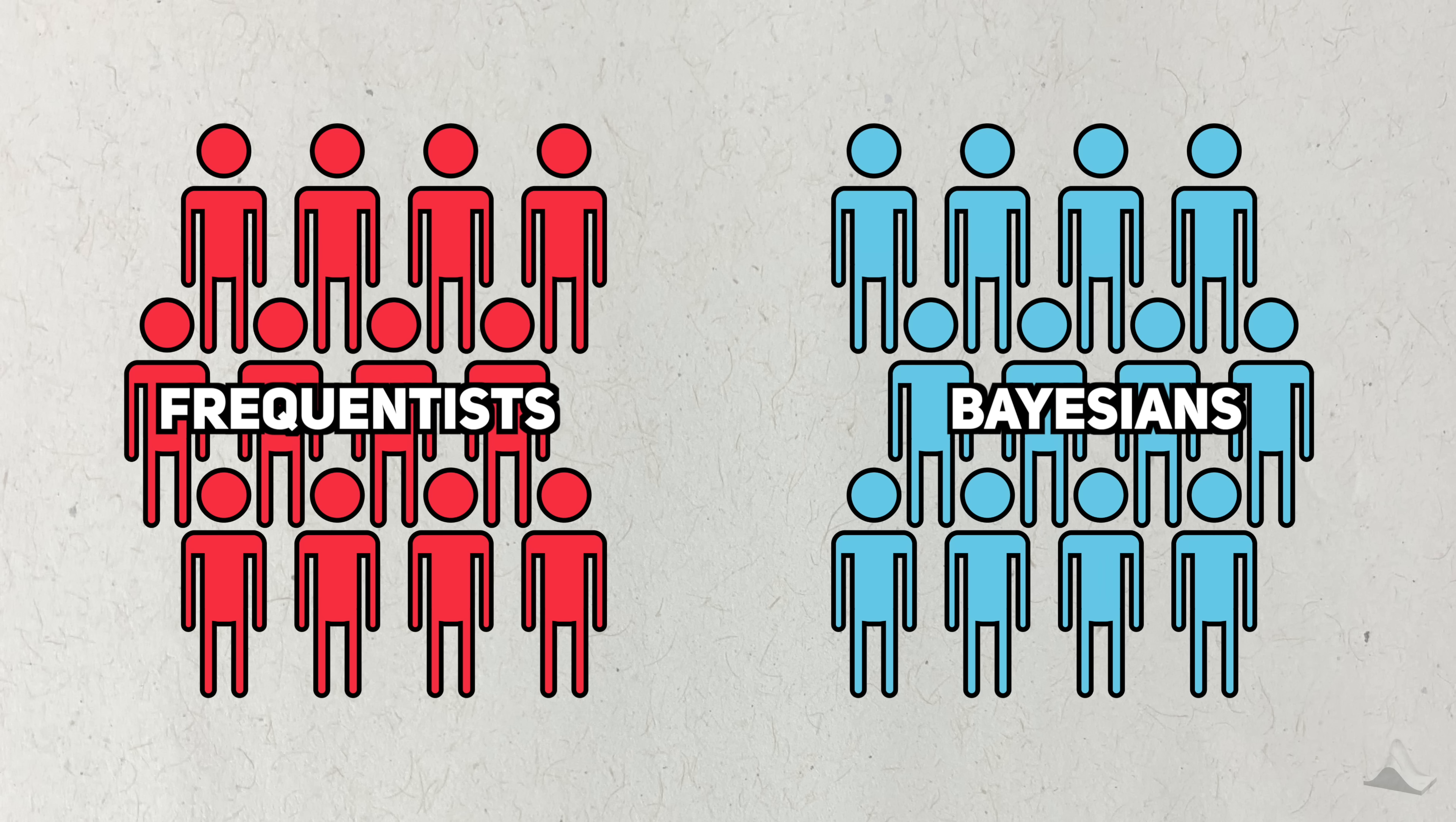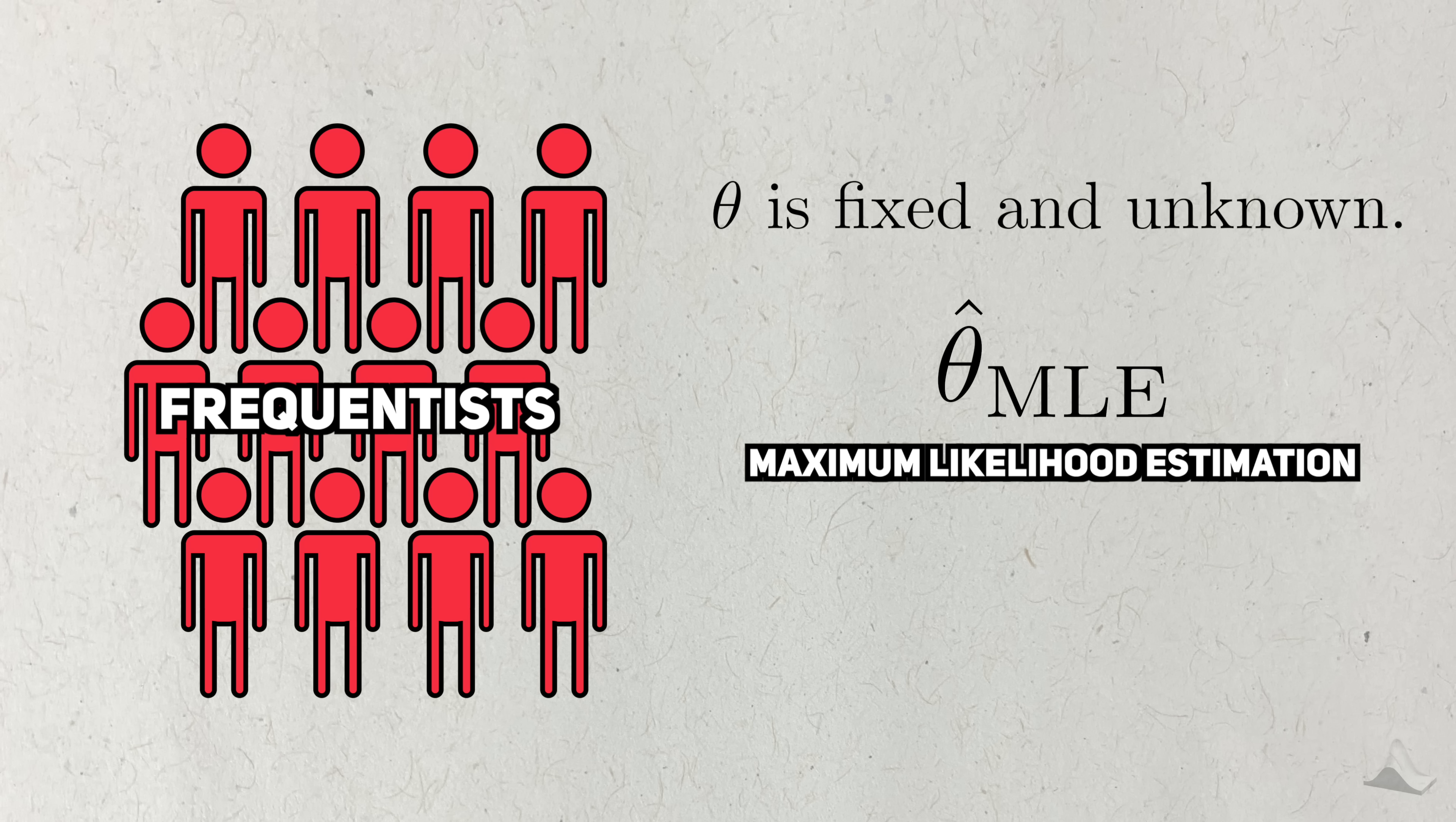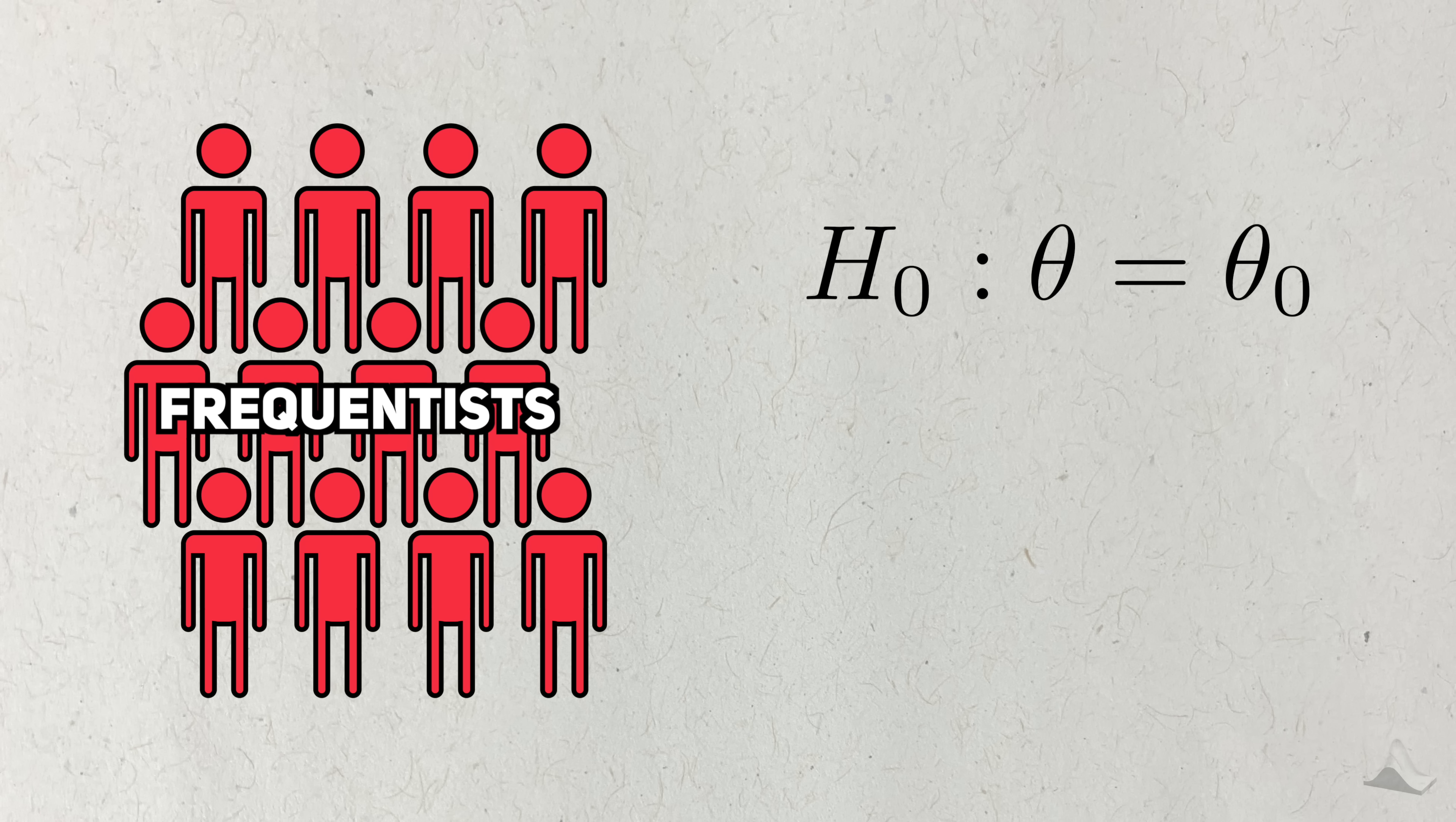Depending on who you ask, they'll say that this should be approached from different ways. The frequentists will tell you that population parameters are fixed and unknown, and you can estimate them with a method like maximum likelihood estimation. With infinitely many data, this estimate will be theoretically close to the true population value. Then, they'll turn to a hypothesis test.